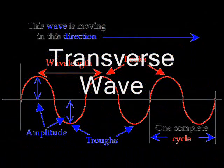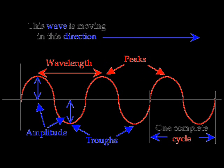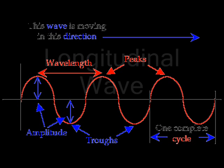There are three different types of waves. The first wave is a transverse wave. This wave can be either electromagnetic or mechanical. This wave travels in an up and down pattern perpendicular to the direction of travel.